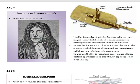In 1674, a Dutch scientist named Anton van Leeuwenhoek used his knowledge of grinding lenses to create his own microscope. He was the first person to observe and describe single-celled organisms, which he originally referred to as animocules. We now refer to them as microorganisms.